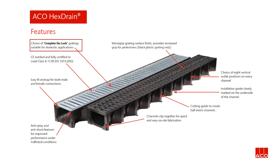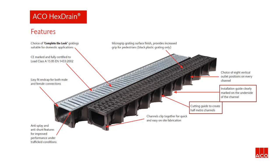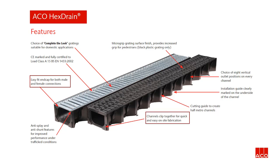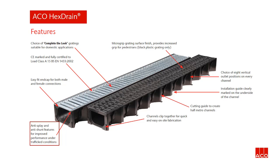The key features are a choice of complete-the-look gratings to perfect the finish for domestic applications; a choice of 8 vertical outlet positions on every channel; a cutting guide on the side of the channel to create half metre channels; and an installation guide clearly marked on the underside of the channel. Channels clip together for quick and easy on-site fabrication using male and female connections. Anti-splay and anti-shunt features for improved performance under traffic conditions. CE marked and fully certified to load class A15.